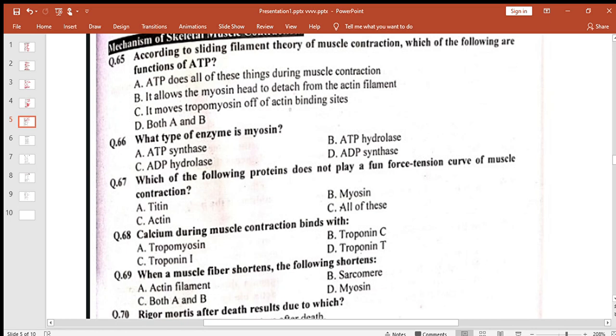So last video me humne 64 tak MCQs kar liye the. Now, Q65: According to sliding filament theory of muscle contraction, which of the following are functions of ATP? It allows the myosin head to detach from the actin filament. B option humare pas correct.